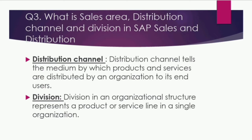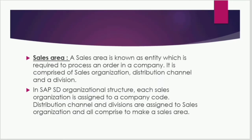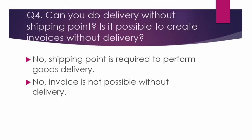The next question is: what is the sales area, distribution channel, and division in SAP SD? The distribution channel tells the medium by which products and services are distributed by an organization to its end users. Division is an organizational structure representing a product or service line. A sales area is the entity required to process an order in a company — it is comprised of sales organization, distribution channel, and division.